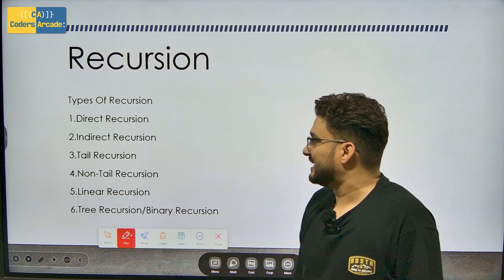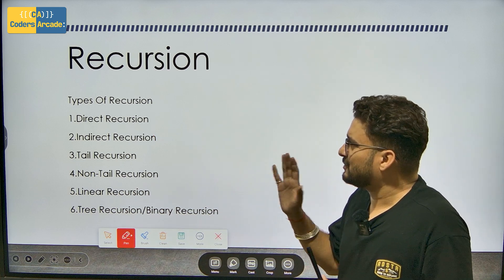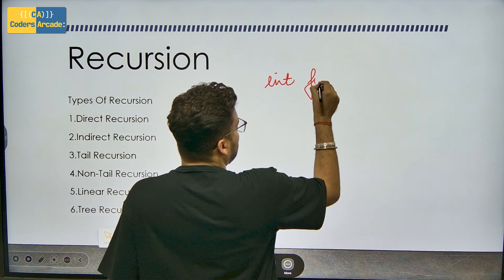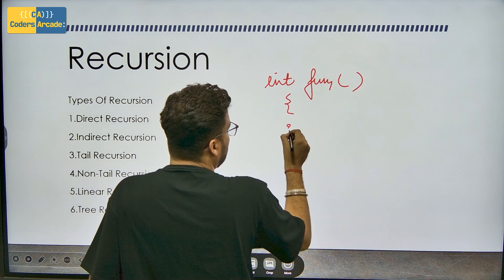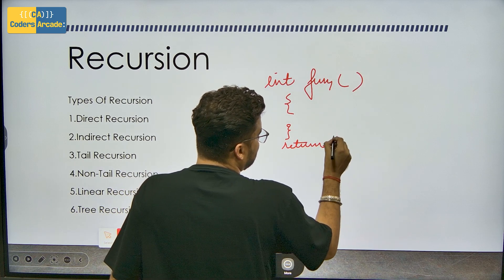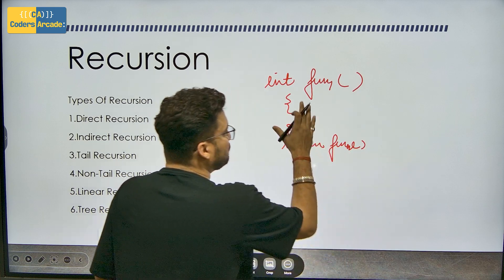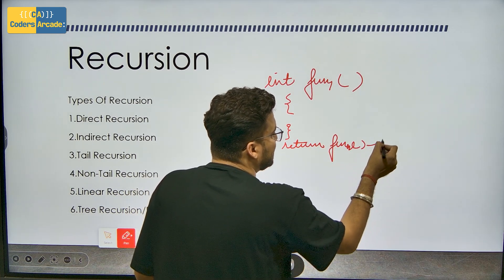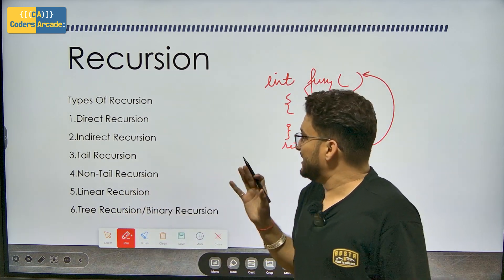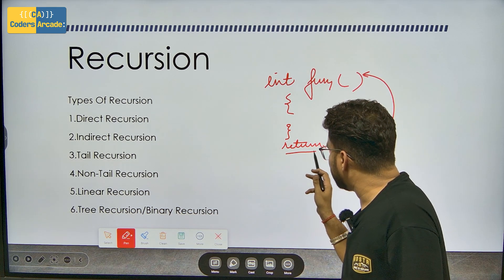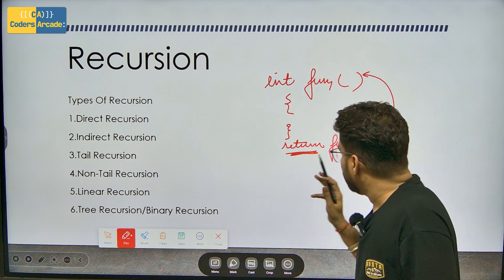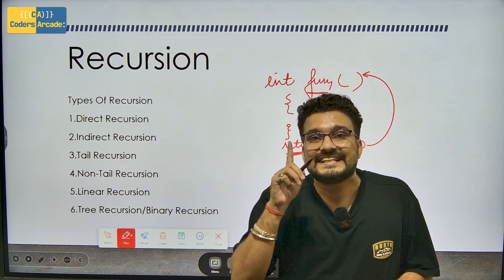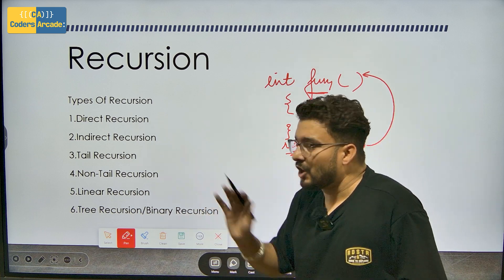The third one is tail recursion. In direct recursion we have a function and we call that function in the return statement. Tail recursion means the return statement contains only that function itself — nothing else. You have to focus on the return: if you are only returning that function and nothing more, it is tail recursion.